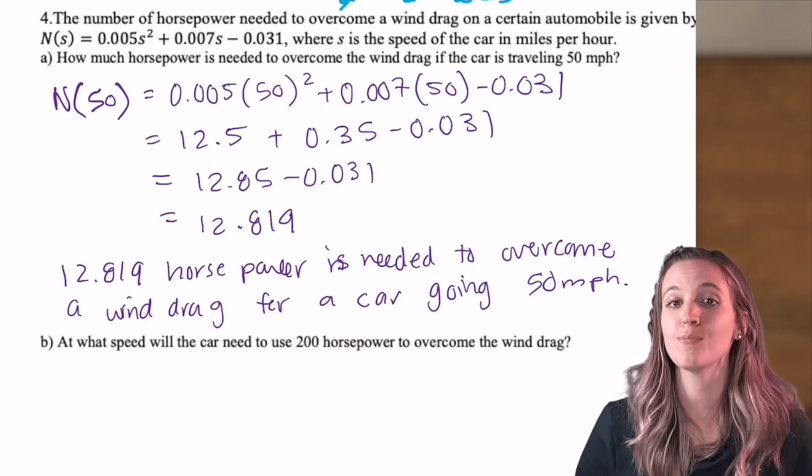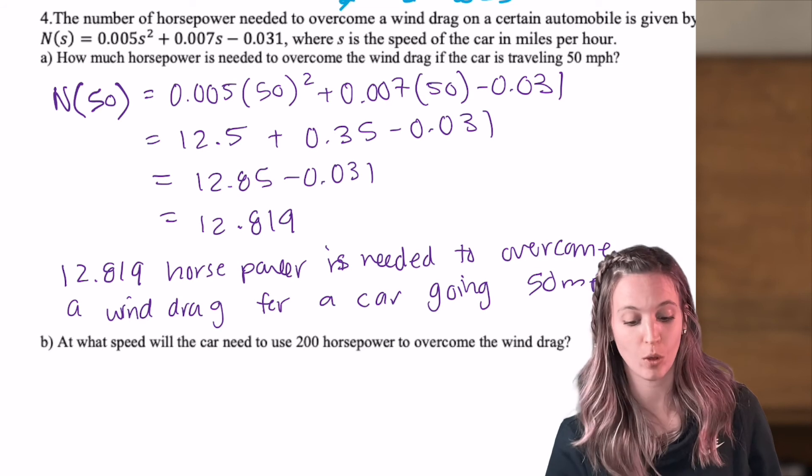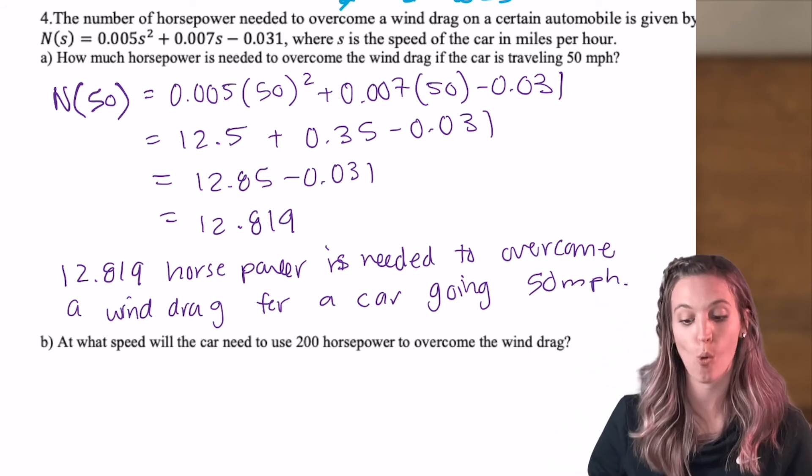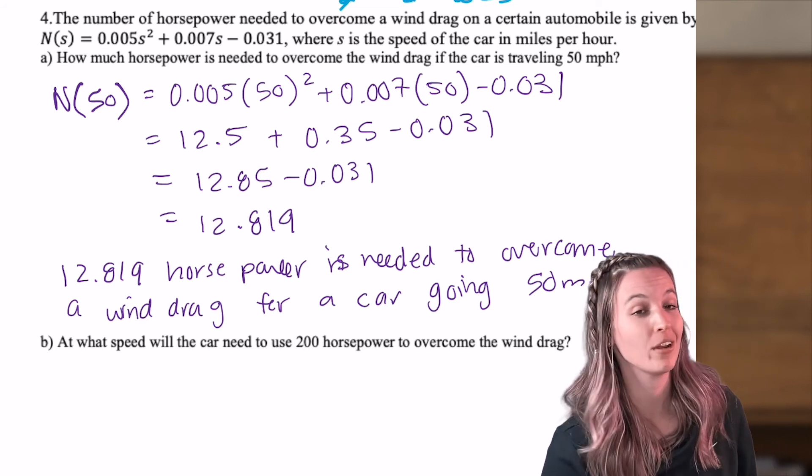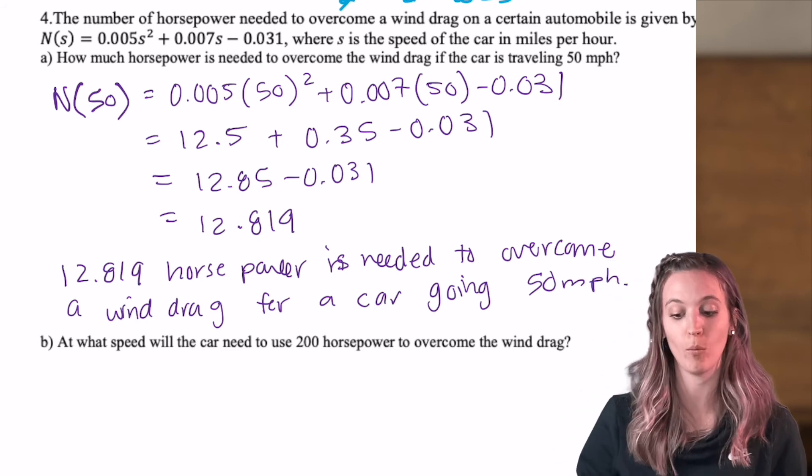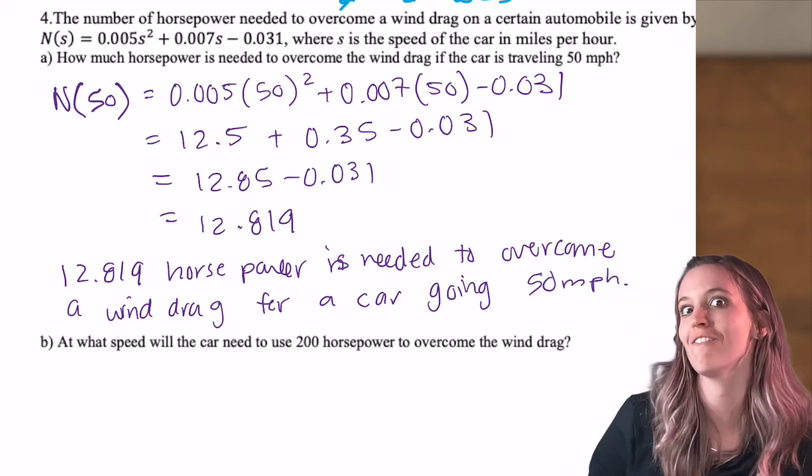So when I input the speed of 50 miles per hour, I get an output of 12.819 horsepower. So 12.819 horsepower is needed to overcome a wind drag for a car going 50 miles per hour.